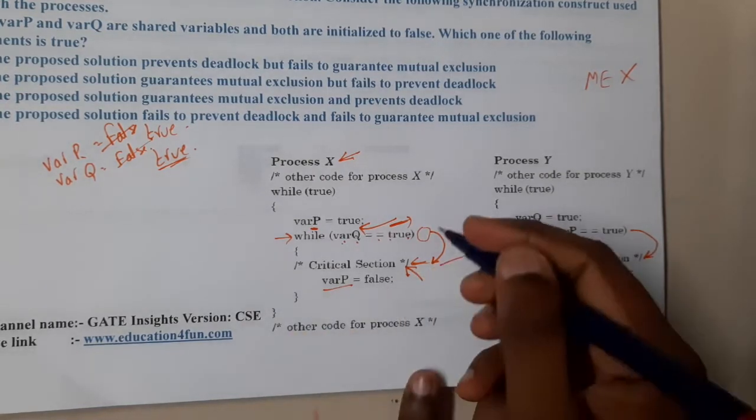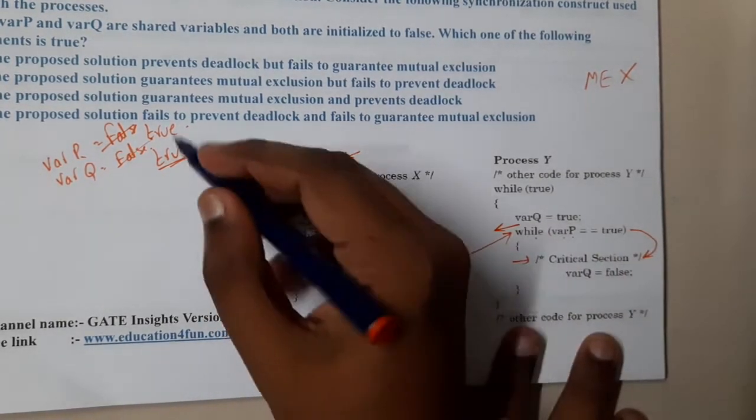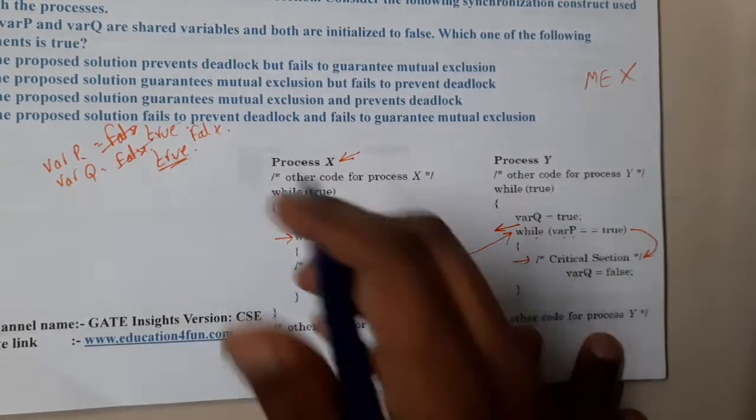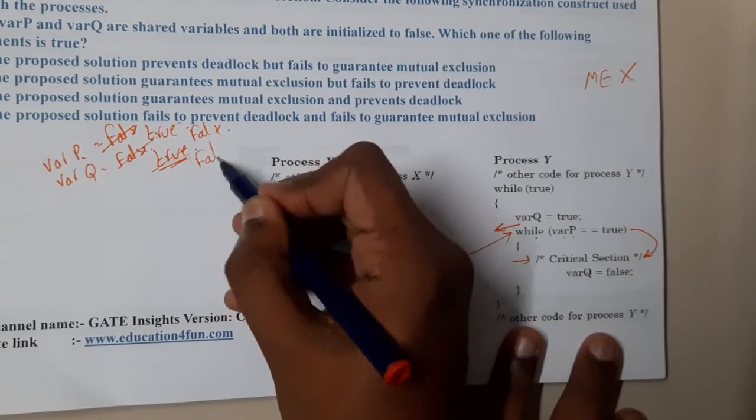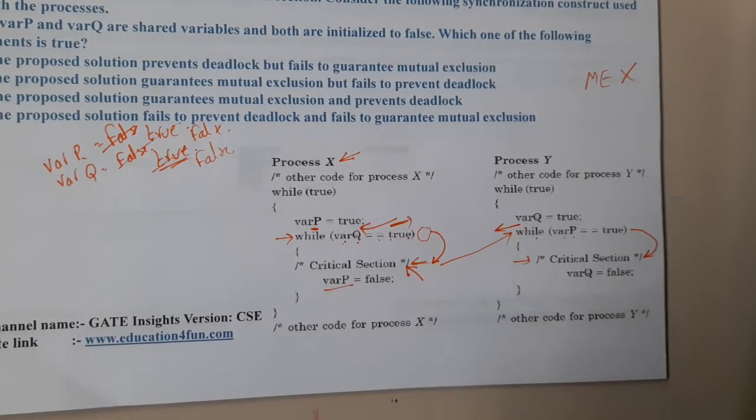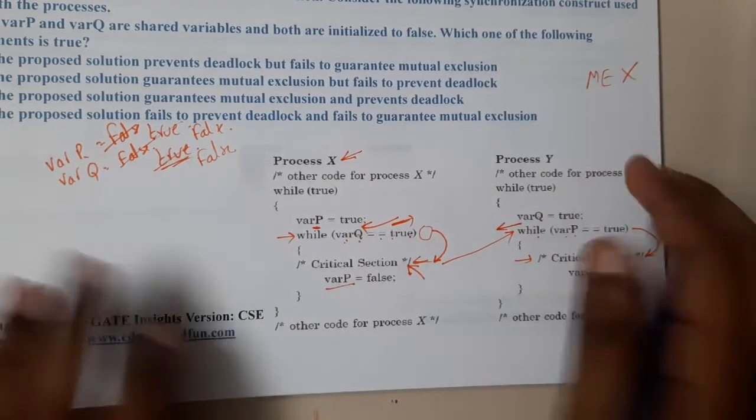He is going to leave by making that particular statement false. So varP will be made false. If this is also executed, this will also be made false. So indirectly, at the end we are going to get the results. Let us check the options first and try to eliminate some options.